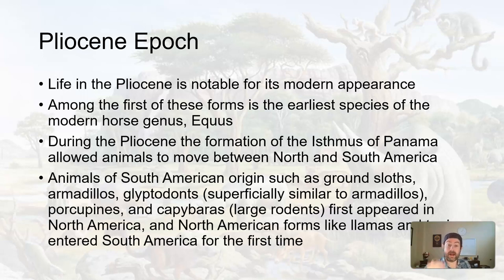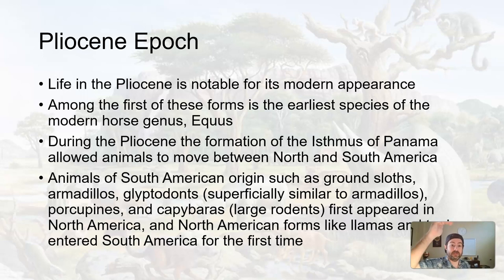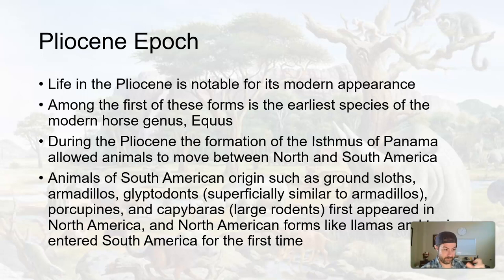So on land, life diversified; in the sea, life got kind of cut off and went on separate evolutionary tracks. Animals of South American origin such as giant ground sloths, armadillos, glyptodonts, porcupines, and capybaras first appeared in North America, and then North American organisms like llamas and tapirs entered South America — all because of this new land bridge, the Isthmus of Panama.